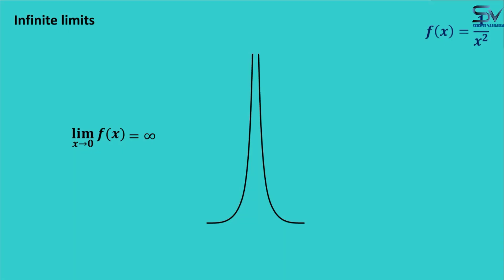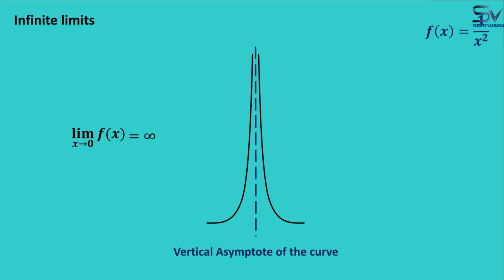Now let me show you how infinite limits are related to the vertical asymptote. Since the function was approaching infinity when x was approaching 0, we can see that the function is approaching a vertical straight line, which is the vertical asymptote of the curve. Since this vertical line is on the y-axis, its equation is x equals 0. We use these asymptotes of the curve to understand the behavior of the function.